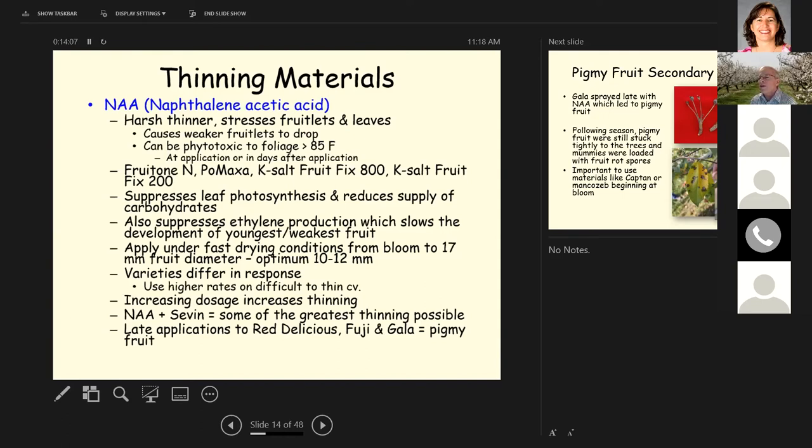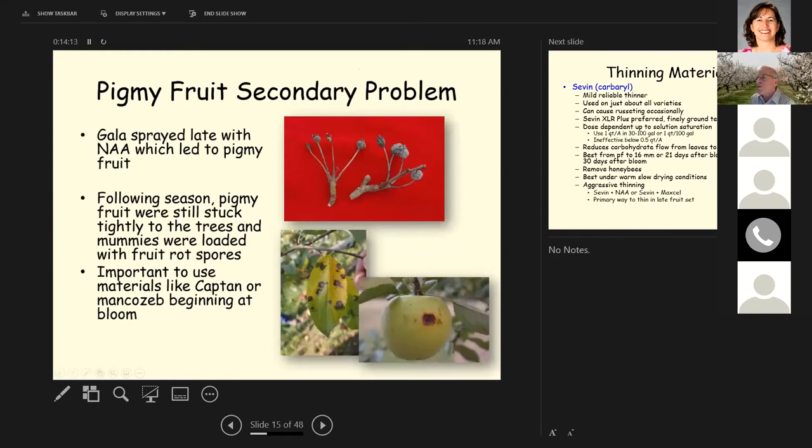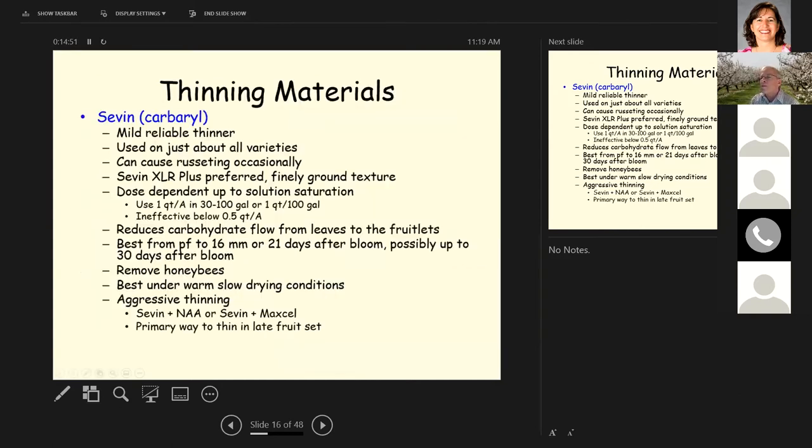Now, late applications of NAA to Red Delicious, Fuji, and Gala can lead to pygmy fruit. These are pygmy fruit over on the right. They're little fruit that hang on the tree till the next year and don't drop off. This is a case where we had Gala. It was sprayed late with NAA. We got pygmy fruit. These fruit loaded up with fruit rot and then they release fruit rot the next season and made control much more difficult. It's important to use materials like captan or mancozeb around bloom for fruit rot control. And you want to be very careful with captan if you're planning to use oil in your spray schedule.